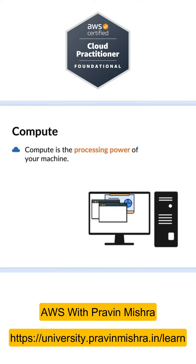Similarly, if you run a heavy application or a game on your computer, you will notice your computer doesn't support it. Why? Because that game or application needs a decent processor or more RAM. So in the same way, when you are moving your applications and data to the cloud, you need this compute power — and this is what we get from the compute service provided by cloud providers. Cloud providers offer compute services where they provide this computing power. This is called compute.